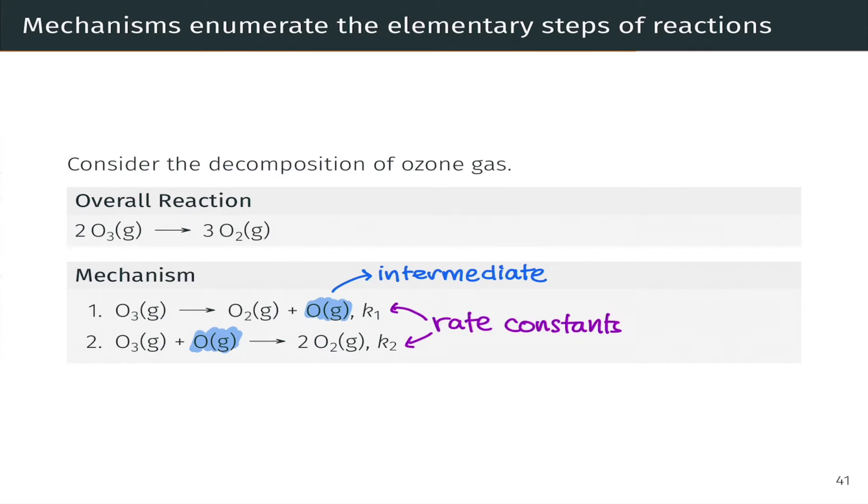We can also notice the kinetic information in the mechanism in the form of these rate constants k1 and k2. We won't always have these handy as numbers. And quite often they're just listed qualitatively with the words fast and slow to indicate which step is faster and which step is slower.